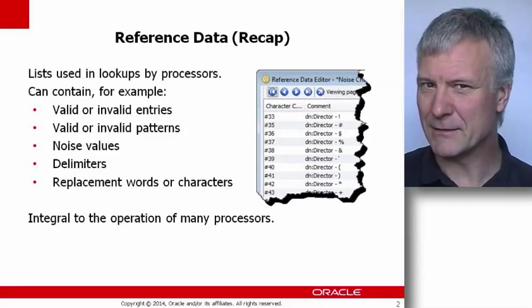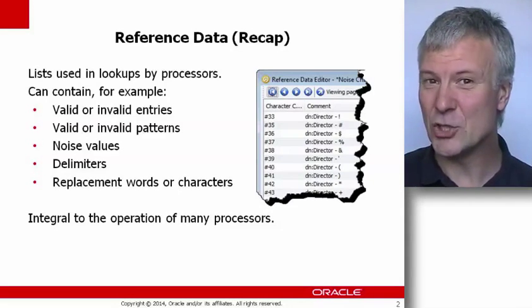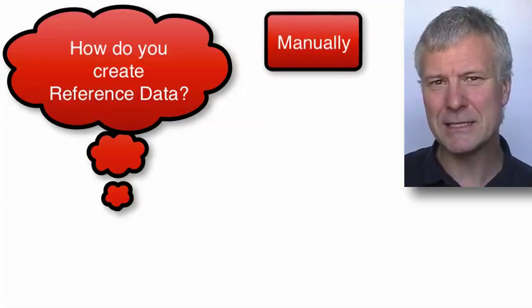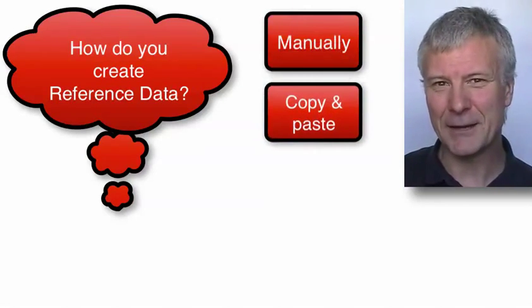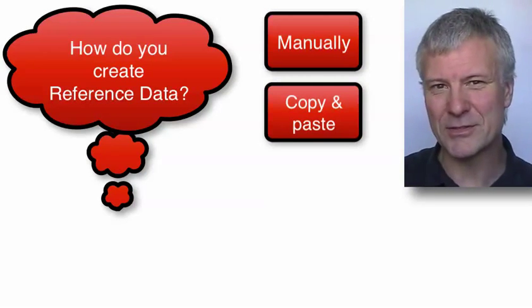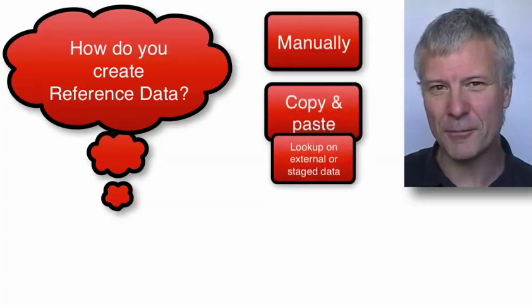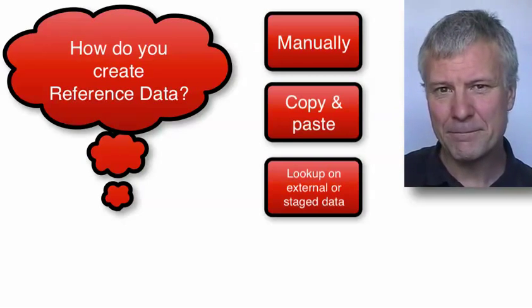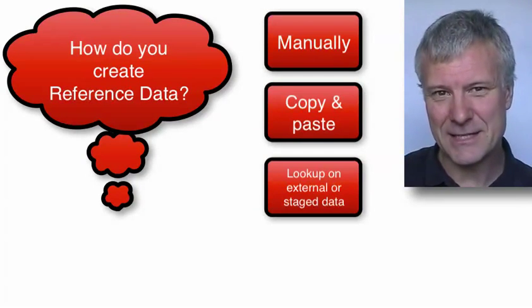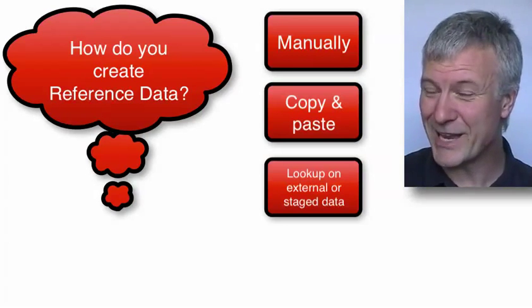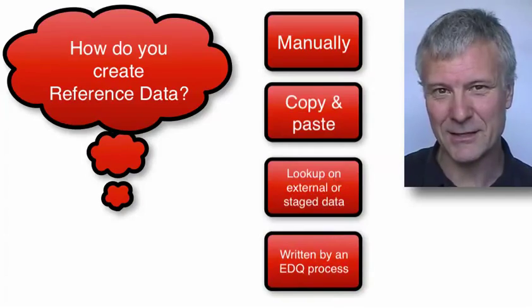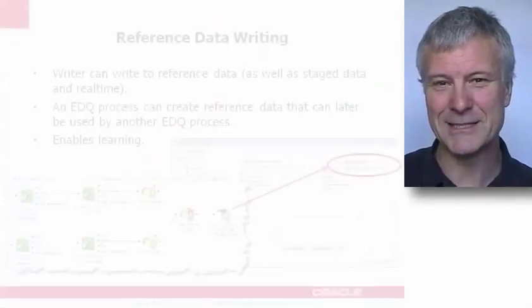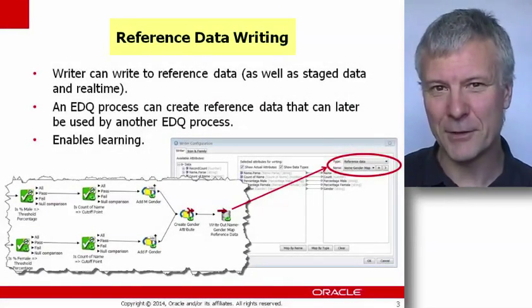That's one example of how you can use reference data, but really the sky's the limit — you can create your own processes using your own reference data. That reference data could be manually created in EDQ, copied and pasted from some other source, or you can look up external data outside of EDQ and use it as if it were reference data. But what we're looking at here is the ability of EDQ to enable you to create your own reference data automatically from an EDQ process — the ability to write out reference data from an EDQ process.